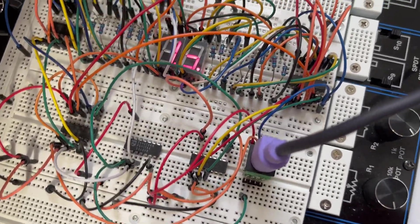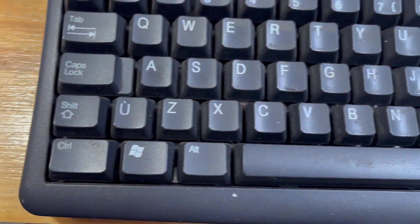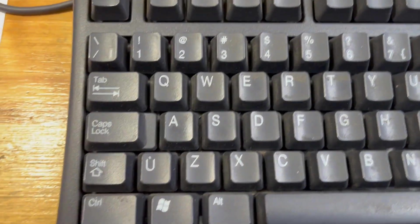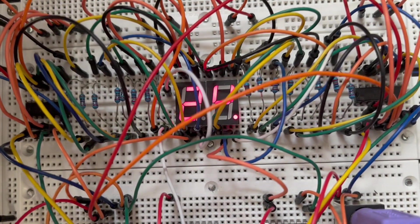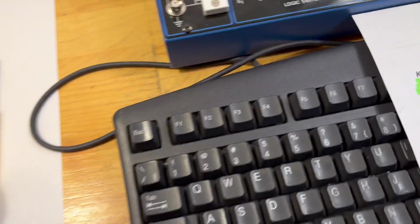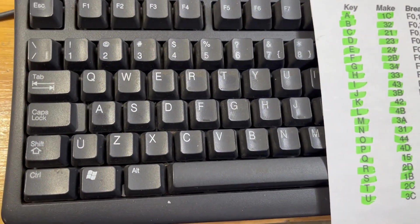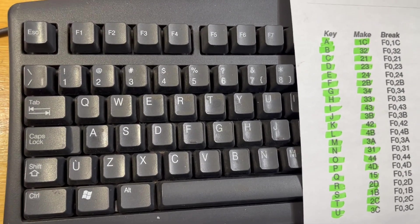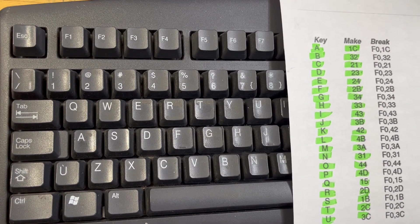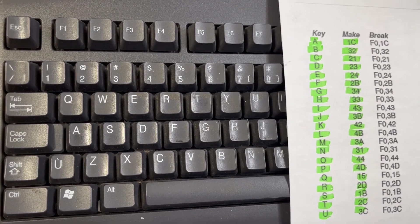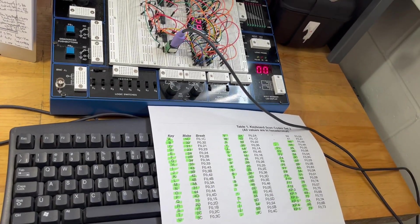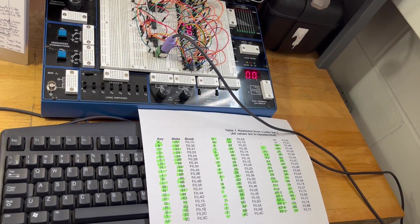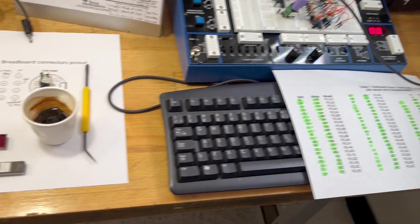One last example: the letter T. If I press T, according to my list, it should be 2C, and this is exactly 2C. Today we're going to wire this project from scratch. I just want to show you my setup before we start.